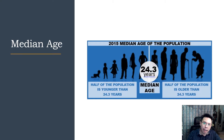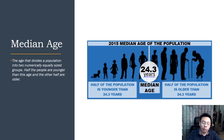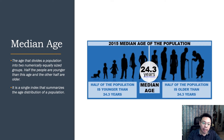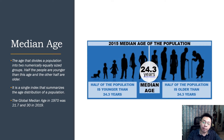The median age is the age that divides a population into two numerically equal groups — half the people are younger and the other half are older. It is a single index that summarizes the age distribution of a population. The global median age in 1970 was 21.7, rose to 24.3 in 2015, and reached 30 in 2019.